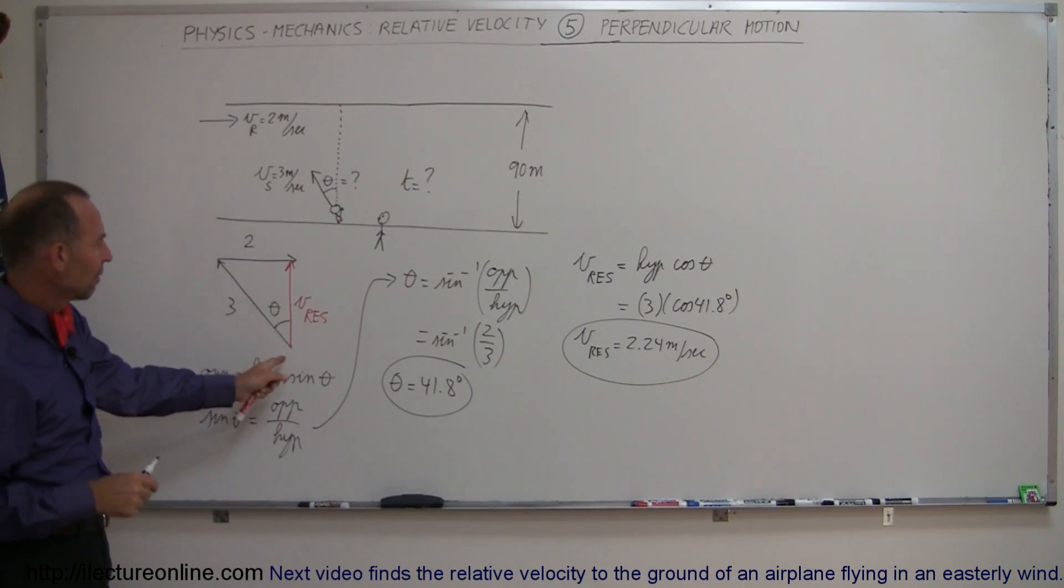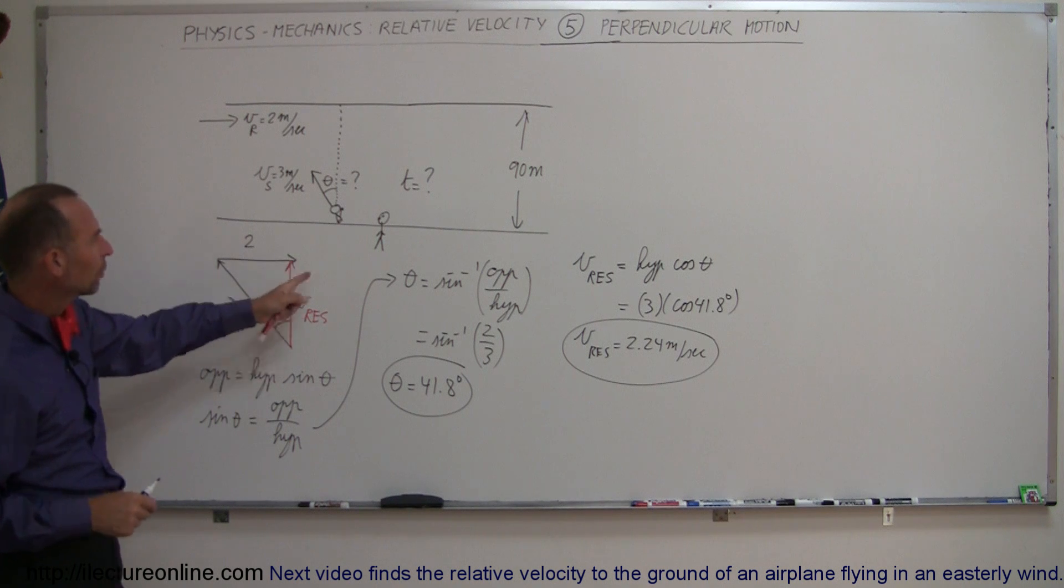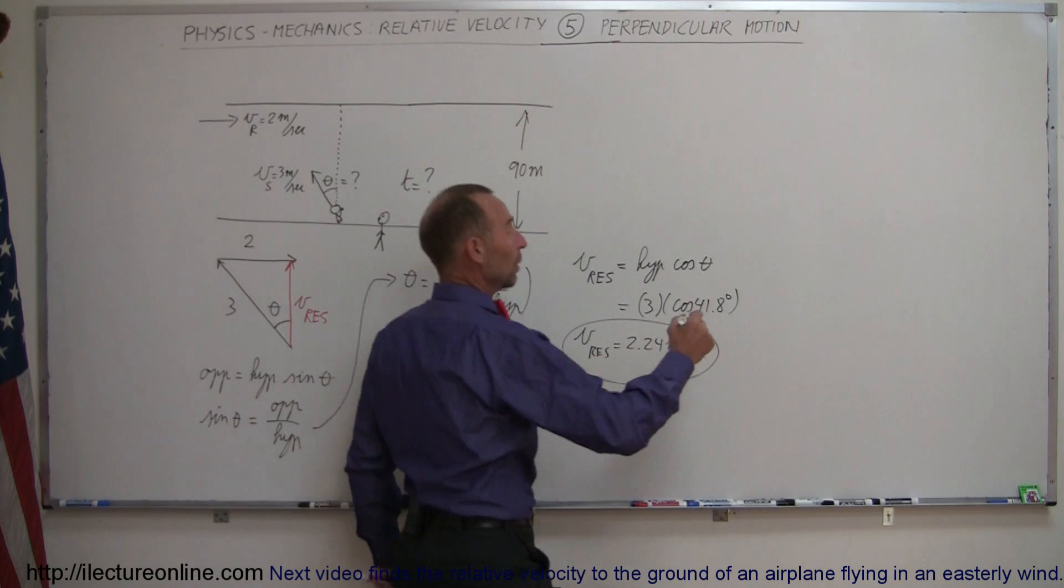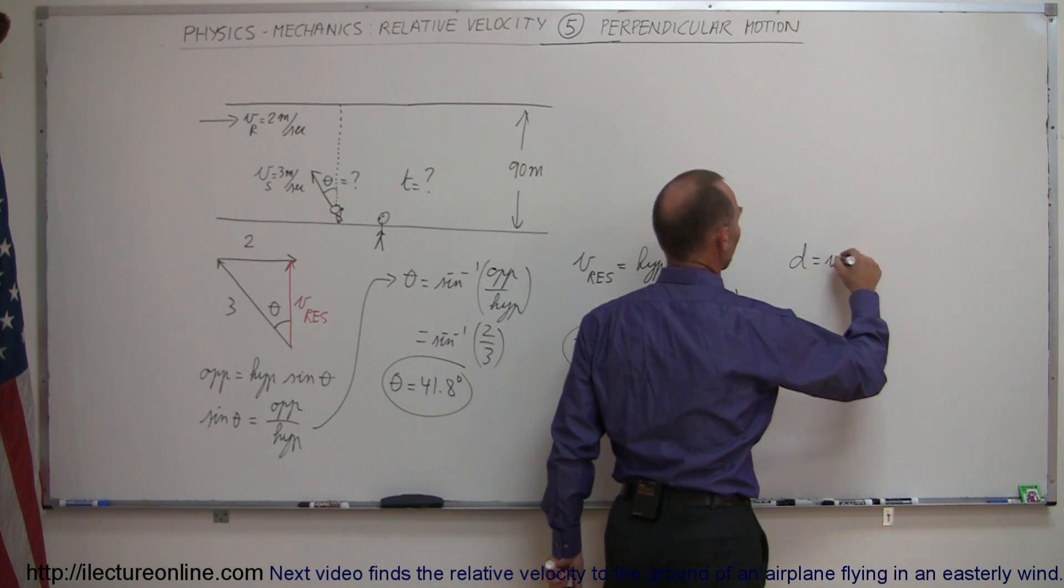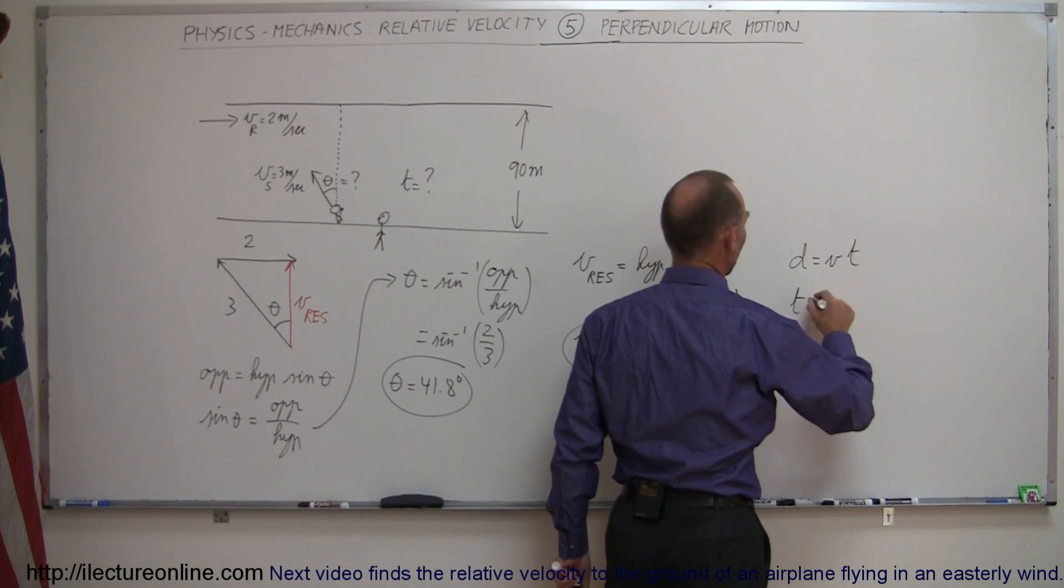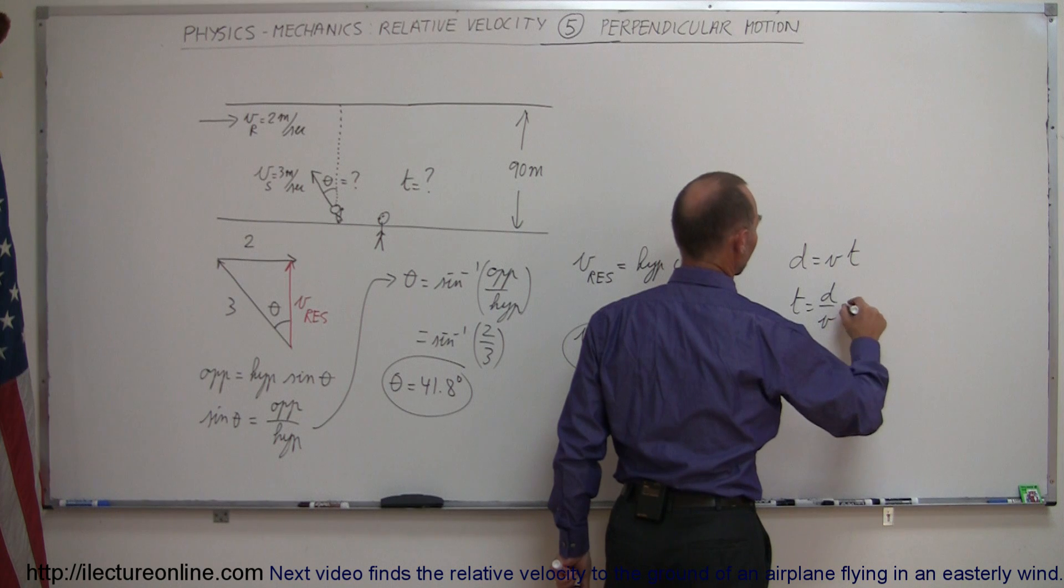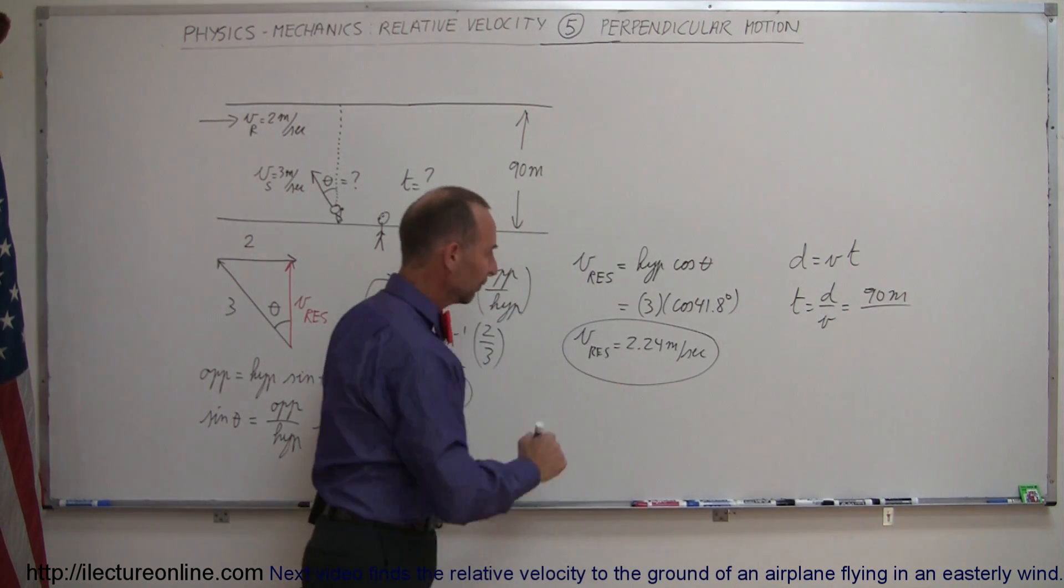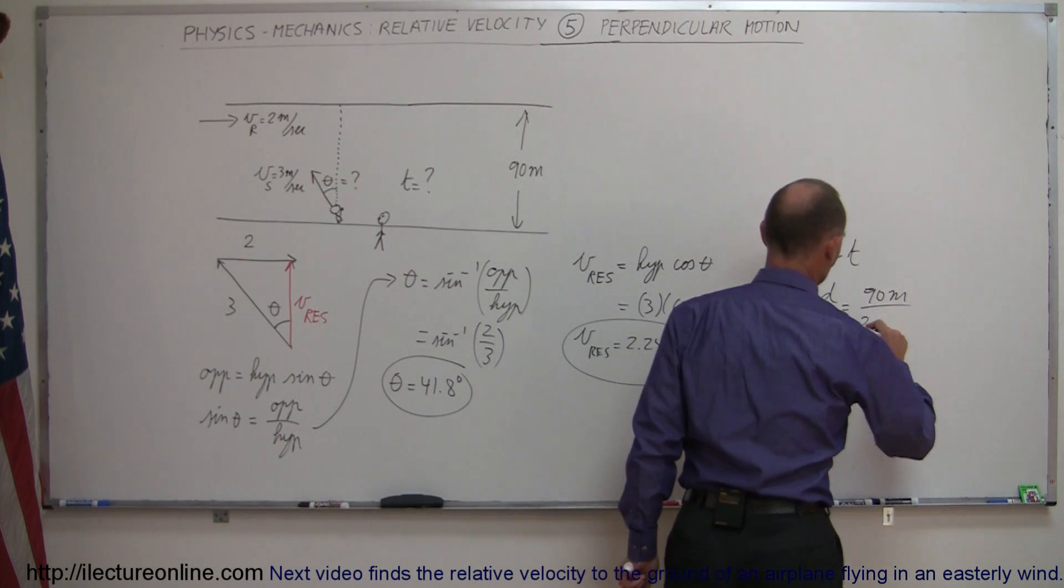Now, realizing that that's the component of the velocity going directly across the river, how long does it take the swimmer to get there? Again, we use the equation, distance equals velocity times time. So time is equal to distance divided by velocity. The river is 90 meters wide, and the velocity of the swimmer is 2.24 meters per second. Of course, that's the apparent velocity or the relative velocity to the side of the river.